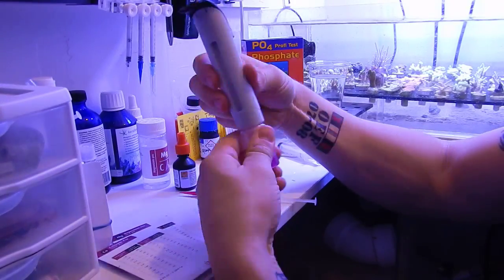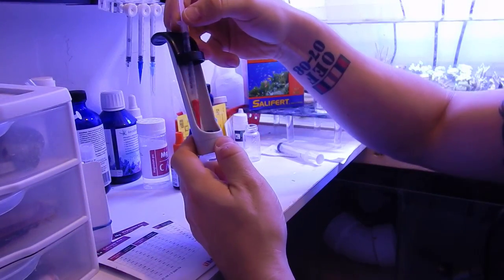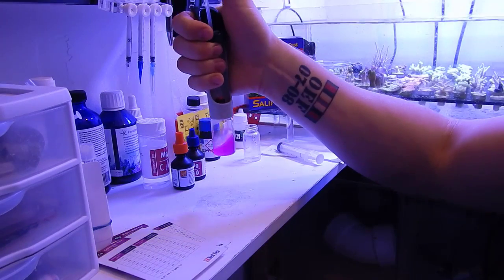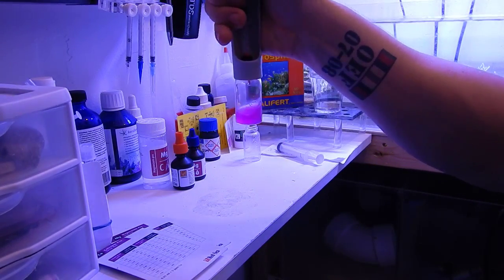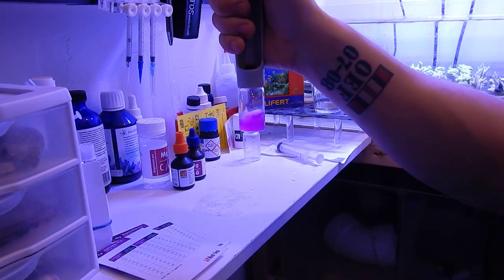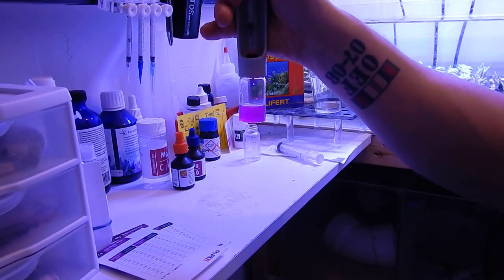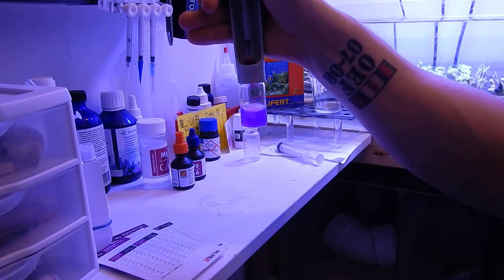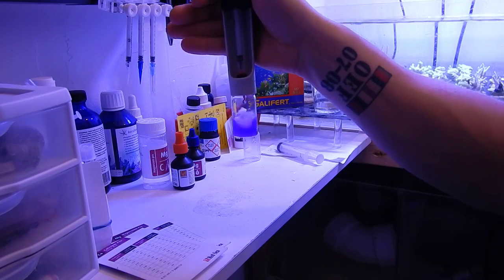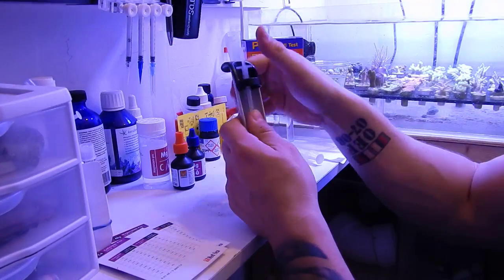When it comes to alkalinity, I was using the Red Sea, but I have since moved to the Hanna checker about a year ago or so. The reason for this is I find that alkalinity is the most important water parameter when it comes to SPS coral and overall health. I find that it needs to be accurate. You need to know where you are. Having fluctuations of two or three dKH based on color titration is just not acceptable, so alkalinity is always a Hanna checker for me.